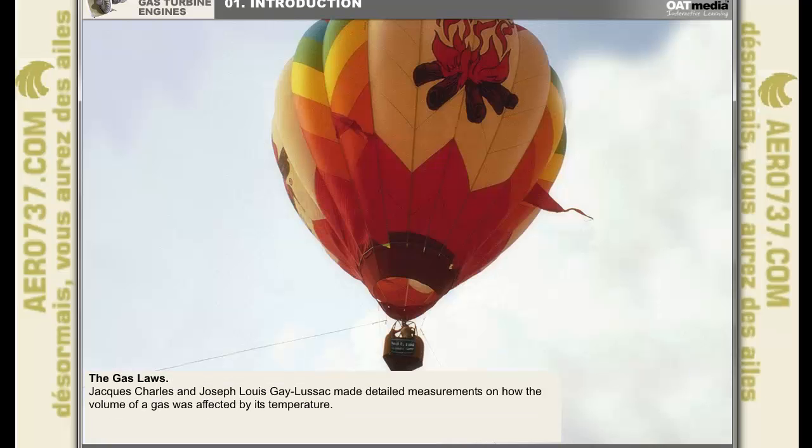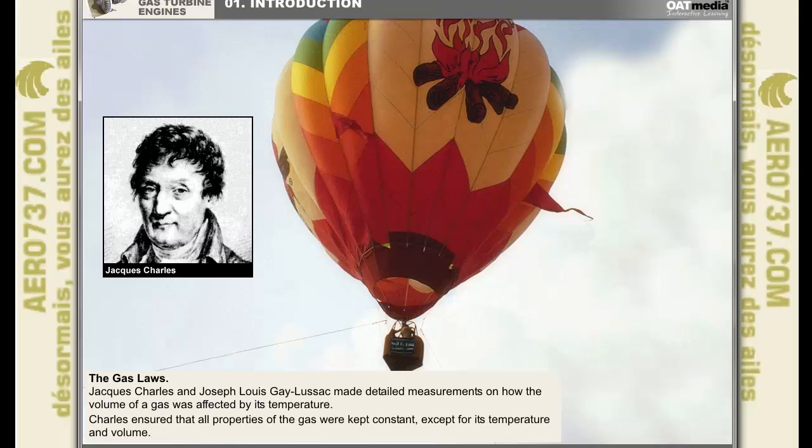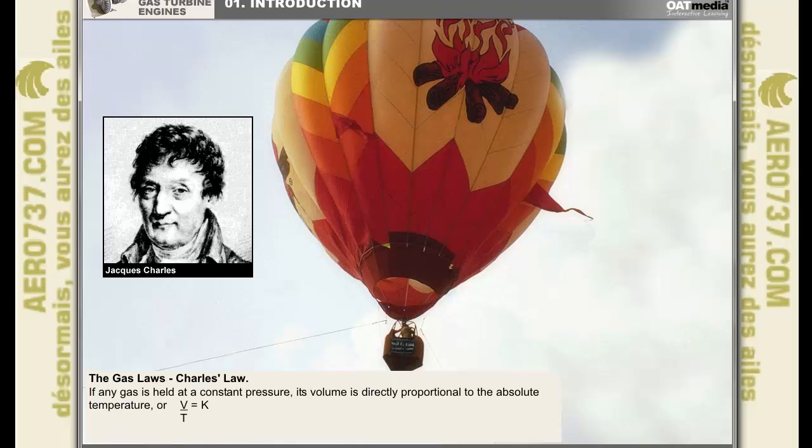Because of the interest in hot air balloons in the early 1800s in France, Jacques Charles and Joseph Louis Gay-Lussac made detailed measurements on how the volume of a gas was affected by its temperature. Just as Robert Boyle made efforts to keep all properties of the gas constant except for the pressure and volume, so Jacques Charles took care to keep all properties of the gas constant except for its temperature and volume. Charles' law, or Gay-Lussac's law, states that if any gas is held at a constant pressure, its volume is directly proportional to the absolute temperature. Or, if stated as a formula, the volume divided by the temperature is a constant.